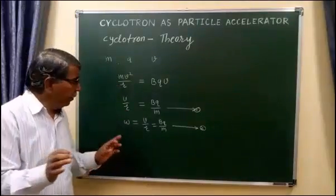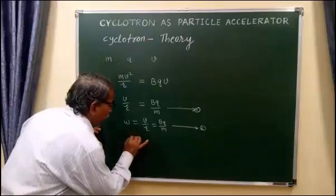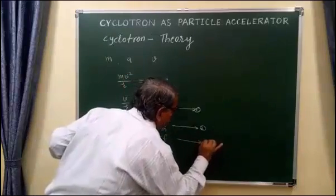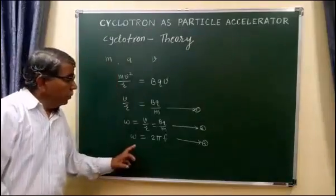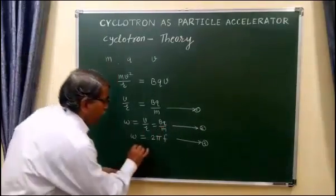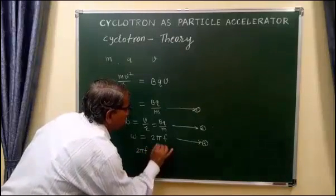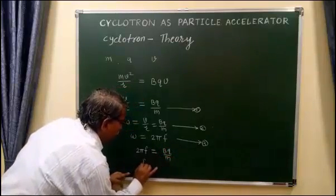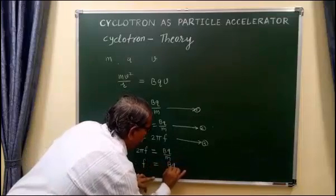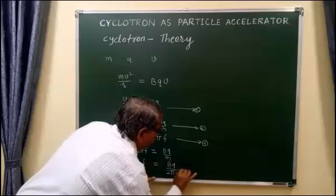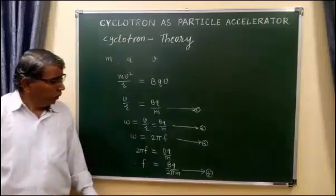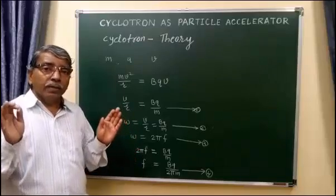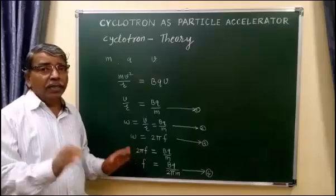We also know the relationship between omega and linear frequency, given by omega = 2πf. This is equation number 3. Using equations 2 and 3, we can write: 2πf = BQ/M. Therefore, f = BQ / (2πM). This is equation number 4, which is nothing but the expression for the frequency of revolution of the positive ion in the cyclotron.